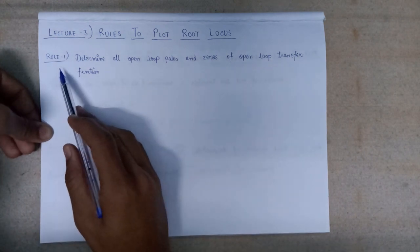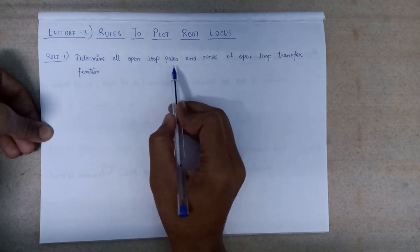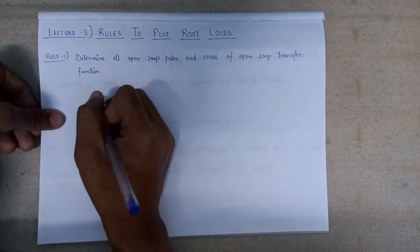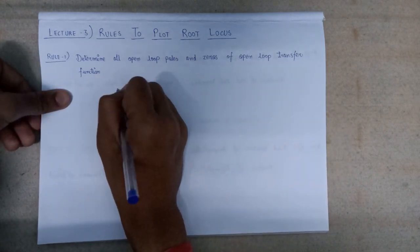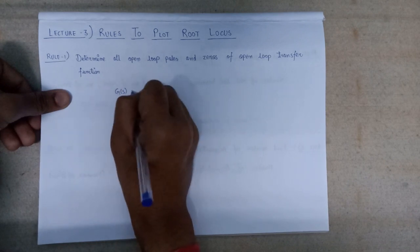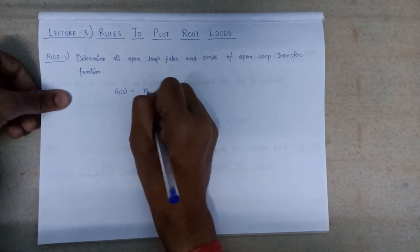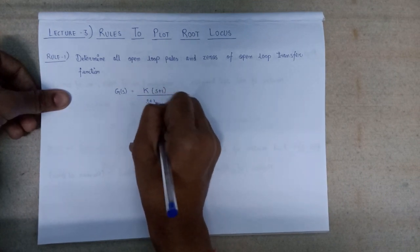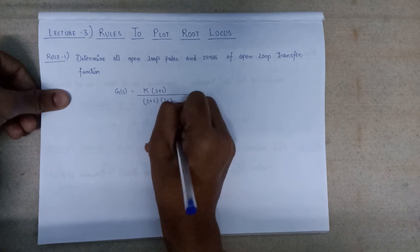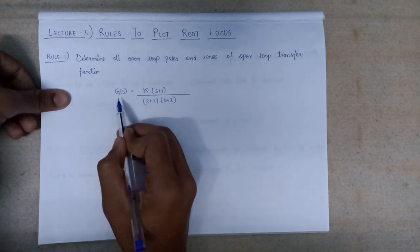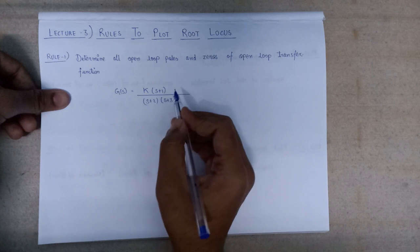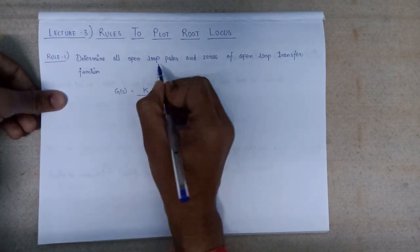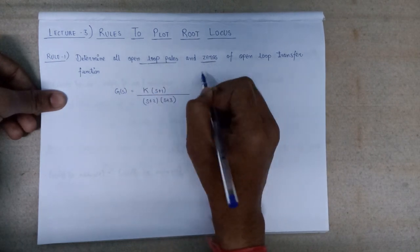Rule number one says: determine all the open loop poles and open loop zeros of an open loop transfer function. Let's assume that the open loop transfer function G(s) is given as k(s+1) divided by (s+2)(s+3). We need to determine how many open loop poles and open loop zeros exist.